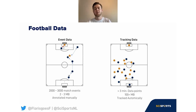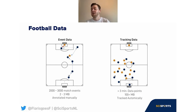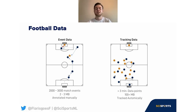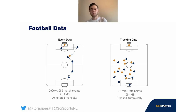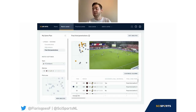On the other hand, we have the tracking data stream, which contains data automatically collected by optical tracking systems that track all moving objects on the field — referee, assistant referee, ball, and all players — at typically 25 frames per second. This stream represents a match as a time series of x and y positions of all moving objects, with about three million data points and roughly 100 megabytes per match.